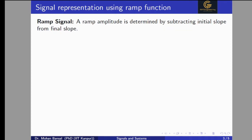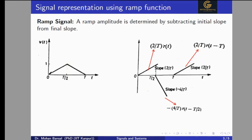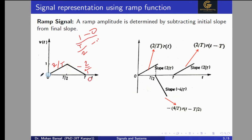Now we will see how we can represent a signal using the ramp function. The ramp amplitude is determined by subtracting the initial slope from the final slope at each transition — just like with the step signal where we subtract the amplitude before transition from the amplitude after transition. At t=0, we observe the slope is 2/T. After t=T/2, the slope is −2/T. After t=T, the slope returns to 0, and before t=0 the slope is also 0.